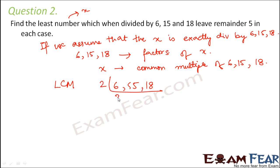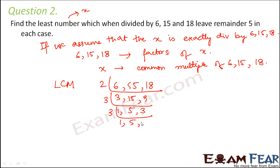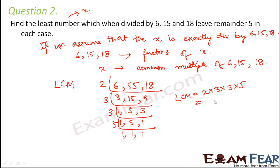Finding the LCM: 6 = 2×3, 18 = 2×9, 15 = 3×5. Breaking further: 3 = 3×1, 9 = 3×3. Continuing the factorization gives us LCM = 2 × 3 × 3 × 5 = 90. So the LCM of 6, 15 and 18 is 90.